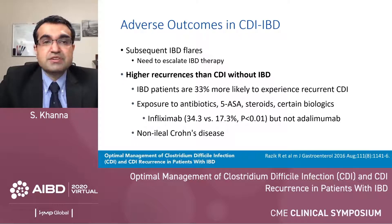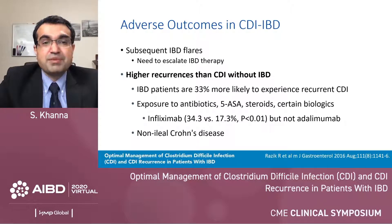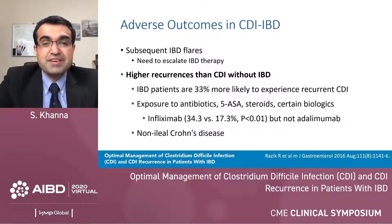There are subsequent IBD flares and a need to escalate IBD therapy in patients who get C. diff infection. IBD patients are 33% more likely to experience recurrent C. diff infection. Risk factors for recurrence include antibiotic exposure, 5-ASA agents, steroids, certain biologics — infliximab more than adalimumab in one study — and colonic Crohn's disease.